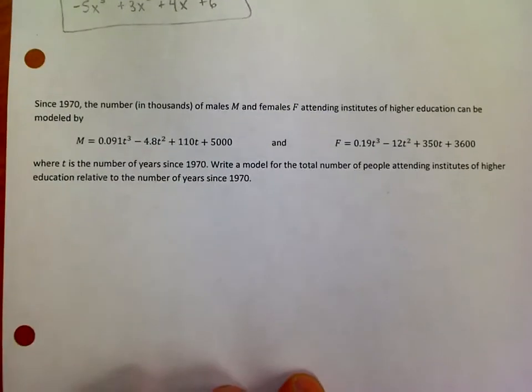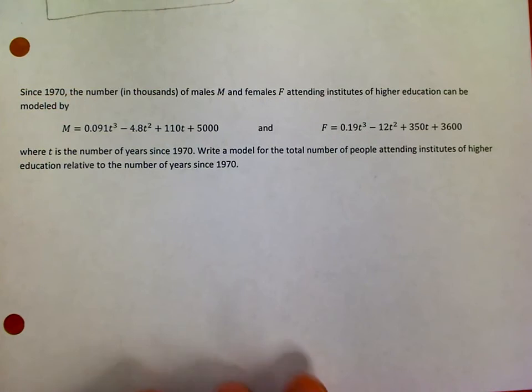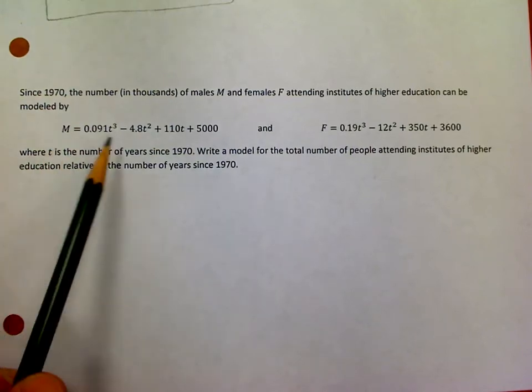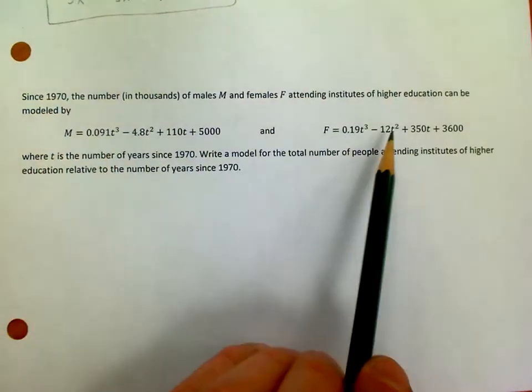Here's the problem. Since 1970, the number in thousands of males and females attending institutes of higher education can be modeled by these two equations. The males can be modeled by this equation and the females can be modeled by this equation.